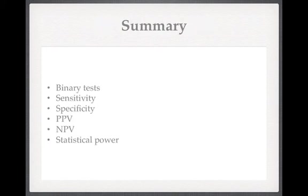To summarise what we've talked about this time: we've talked about binary tests, and in particular sensitivity, specificity, positive predictive value, and negative predictive value. I hope I gave you a way of thinking about them which will help you remember which is which. And then we've talked about statistical power, kind of in the context of binary tests. We've talked about how you can think of power as being the analogous concept to sensitivity, and we've talked about some factors which influence statistical power.